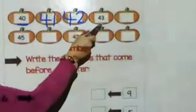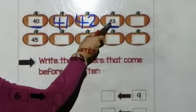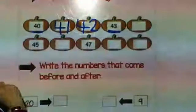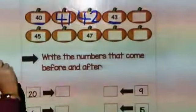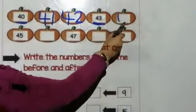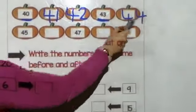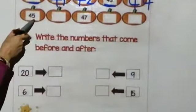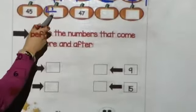What comes after 42? It's already written here. It's 43. How I write it? 4 and 3. What comes after 43? 44. How I write it? 4 and 4. What comes after 44? 45, then 46.